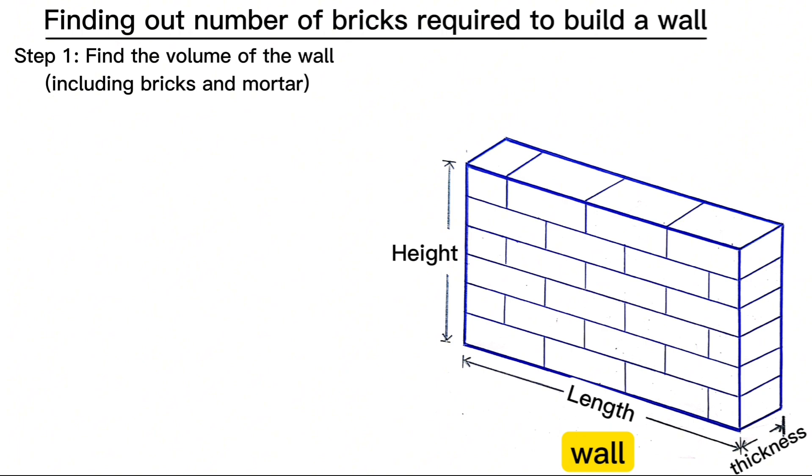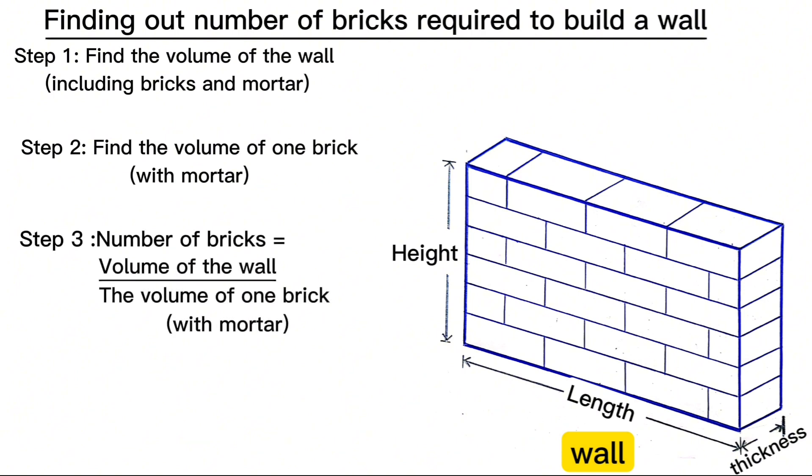Step one is to find the volume of the wall which includes bricks and mortar. Step two is to find the volume of one brick with mortar. And step three is to find the number of bricks, which is simply the volume of the wall divided by the volume of one brick with mortar.